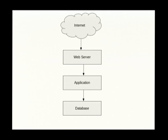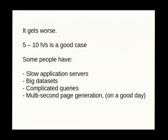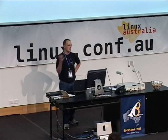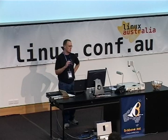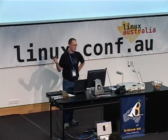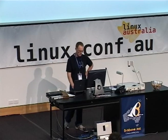Here we have a classic sort of setup: internet web server, application server running PHP, Django, whatever you like, and a bit of a database behind it. You're getting about 5 to 10 hits per second - I'm defining a hit as a page view, so it's a medium duty sort of thing. At one point where I work, we were taking 30 seconds to generate our front page and tens of seconds to generate other pages. For various reasons your page will take a long time to generate.